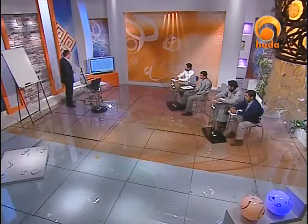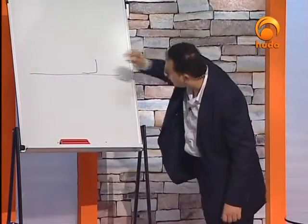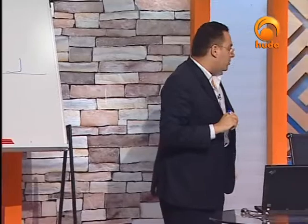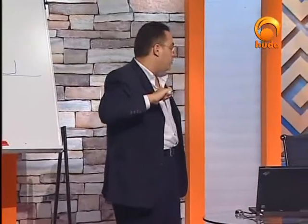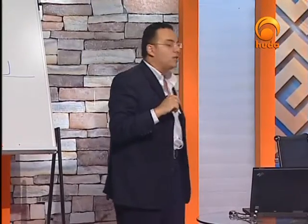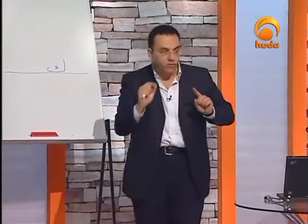Kaf as a letter is very similar in its shape to the tails of Sin, Sheen, Sad, Dad, and is also very close to Fa. But when compared with Kaf, there is a difference in pronunciation. Kaf is a connecting letter that has two distinct shapes — one in independent and final positions, and one in initial and medial positions. To write independent Kaf, start above the line, make a curve, follow the line, make a tiny hook at the end, then pick your pen and draw a little hamza-like figure inside the angle.